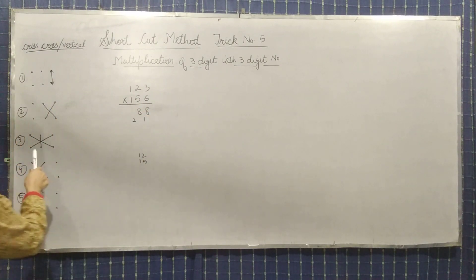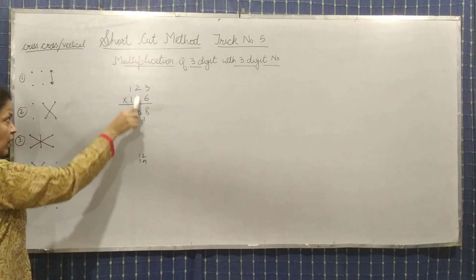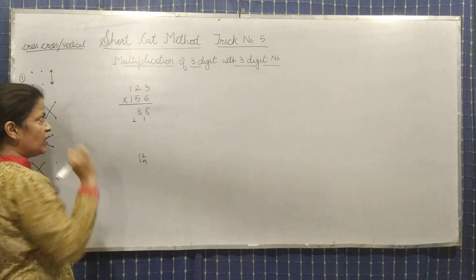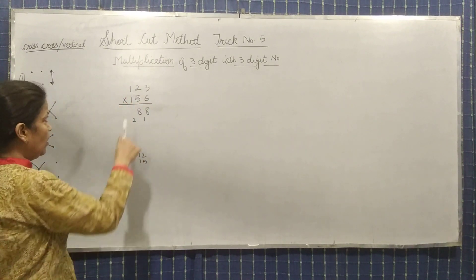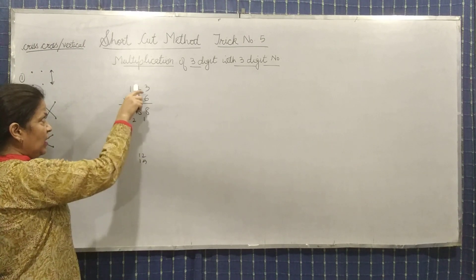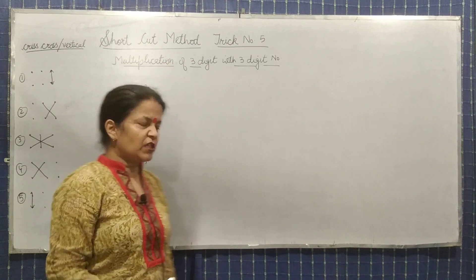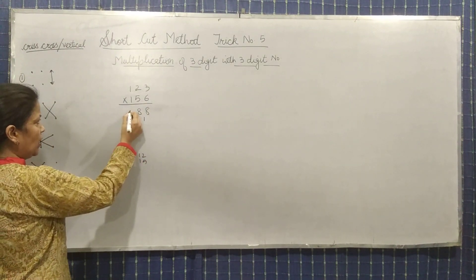Now what should be the third step? Extreme cross and middle term vertically. Extreme cross: one into six is six, three into one is three. Six plus three is nine. Multiply these two: ten. Nine plus ten is nineteen - ten and two - nineteen, twenty, twenty-one. So again two carry.